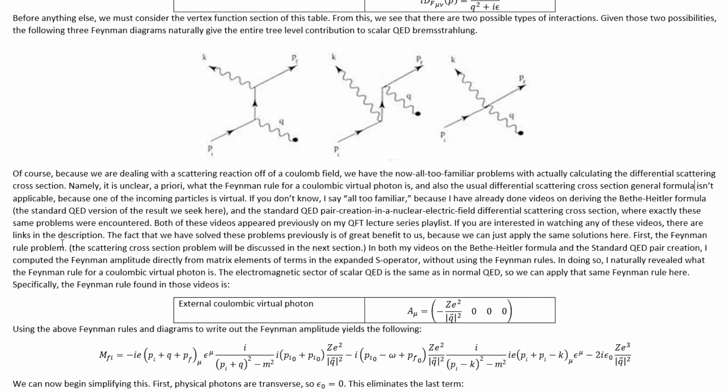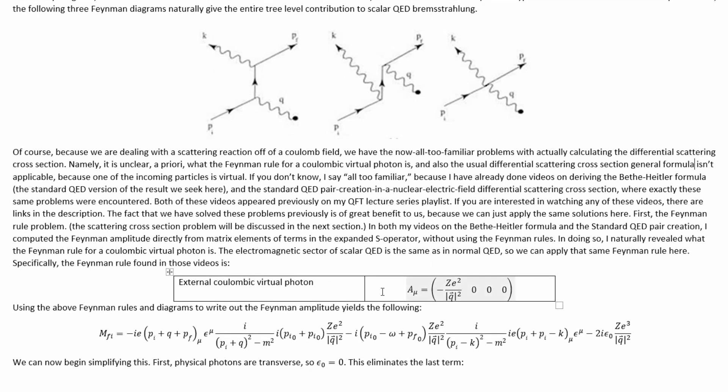First, let's discuss the Feynman rule problem. The scattering cross-section problem will be discussed in the next section. In both my videos on the beta-Heitler formula and standard QED pair creation, I computed the Feynman amplitude directly from matrix elements of terms in the expanded S operator without using the Feynman rules. In doing so, I naturally revealed what the Feynman rule for a Coulombic virtual photon is. The electromagnetic sector of scalar QED is the same as in normal QED, so we can apply the same Feynman rule here. Specifically, the Feynman rule we found was this.